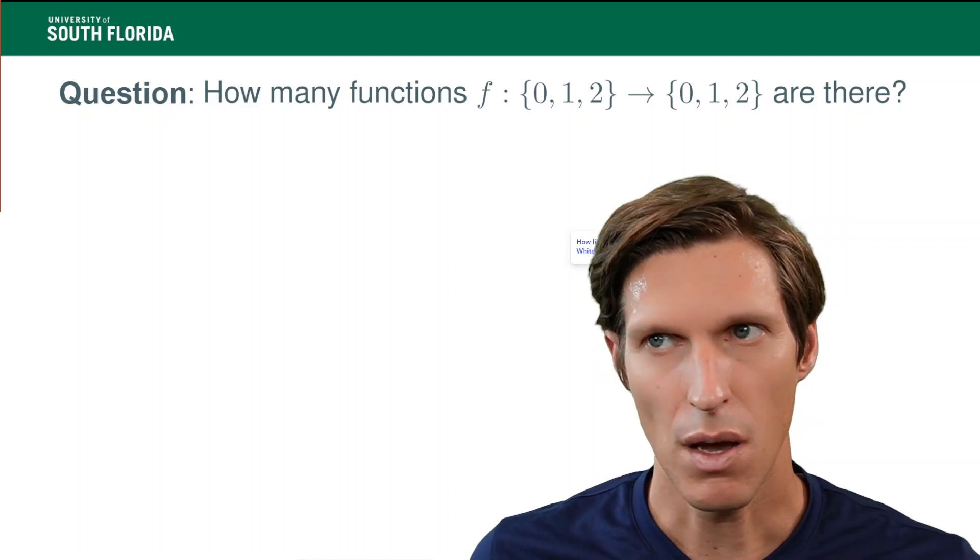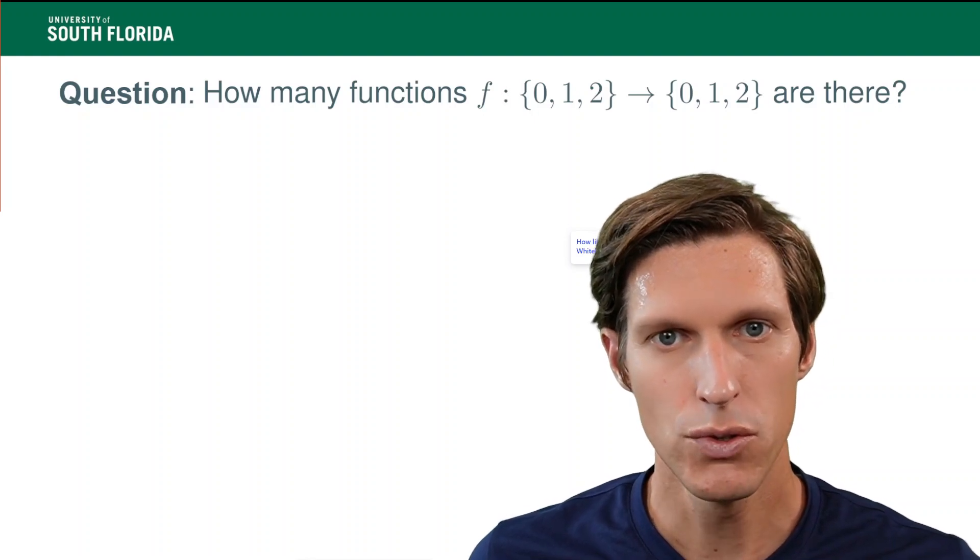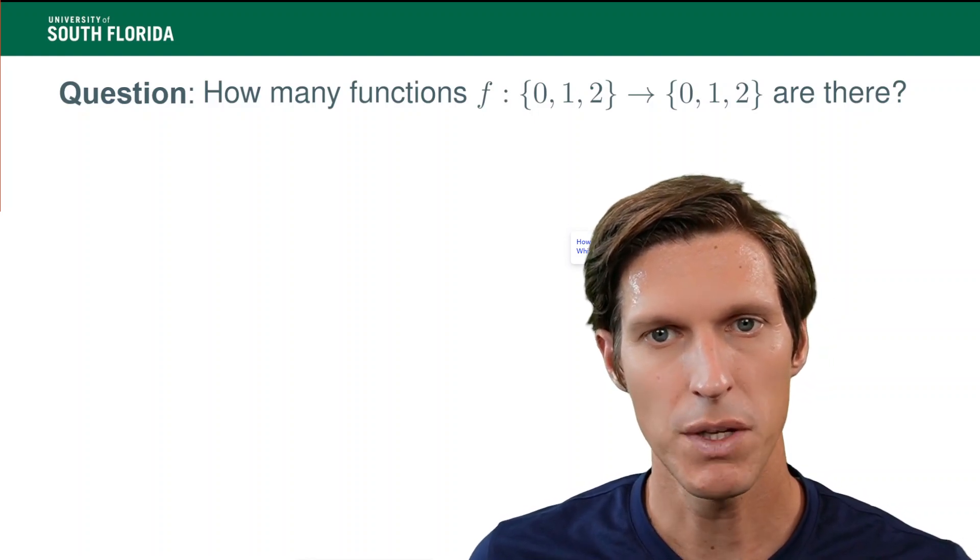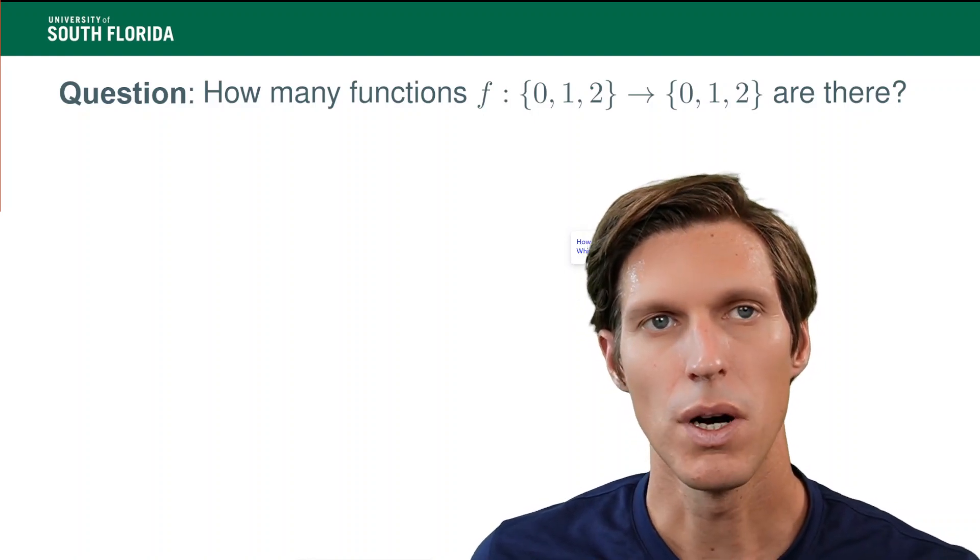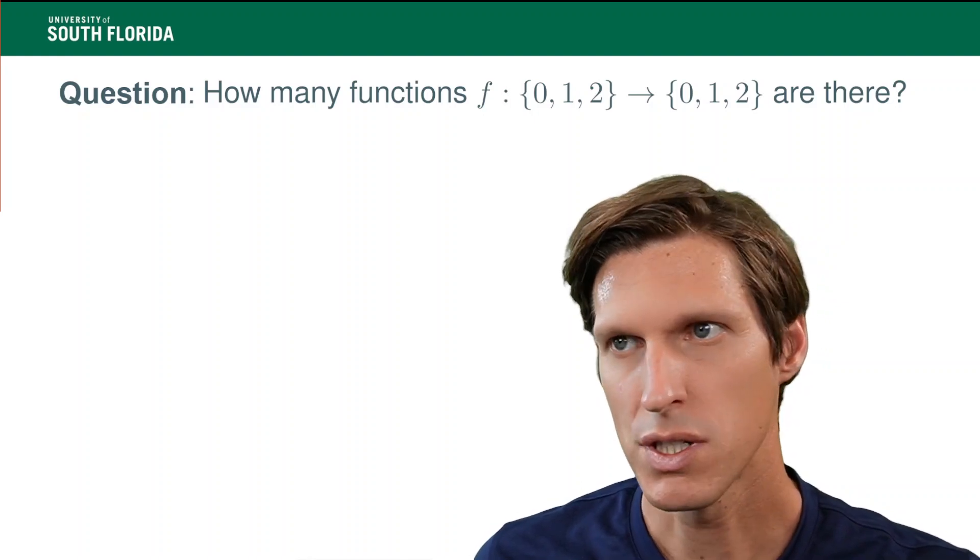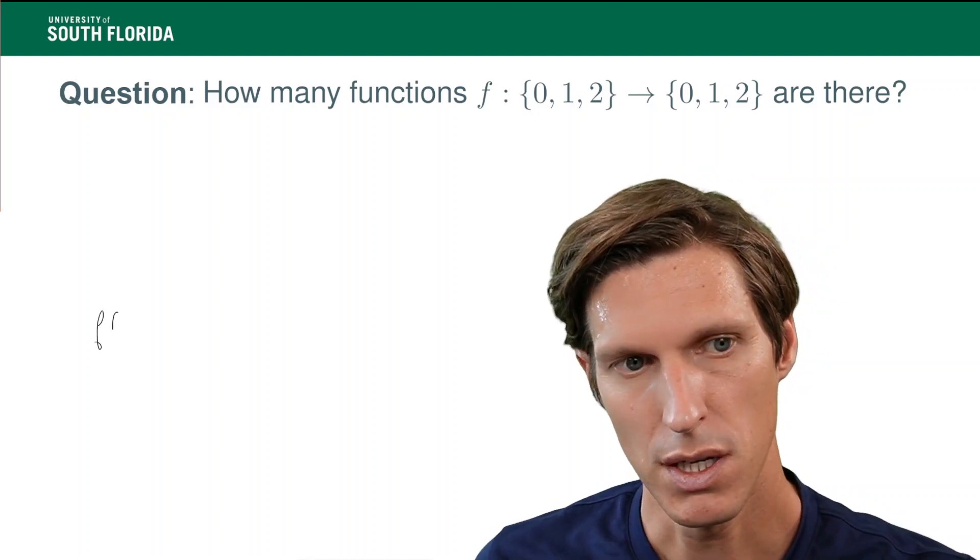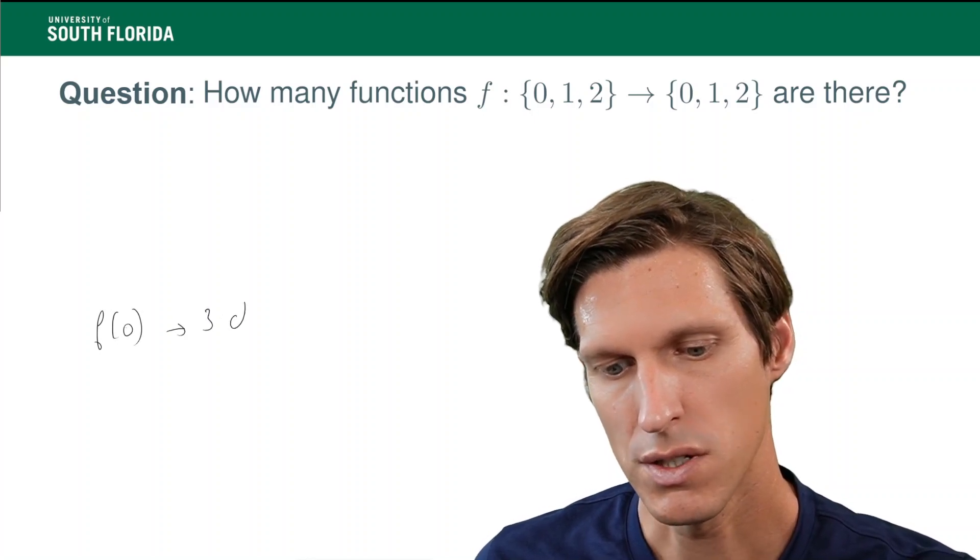So, here, toy example, I'm looking at functions from the set {0, 1, 2} to the set {0, 1, 2}. So, how many functions between those two sets are there? So, intuitively, the way I like to see it is, you just enumerate your choices for f of 0. So, f of 0, how many choices? Three choices.